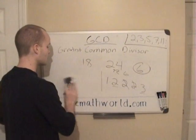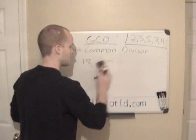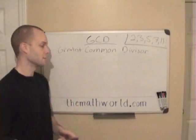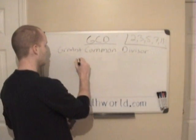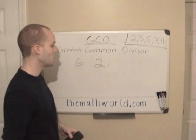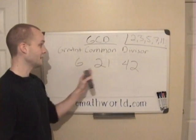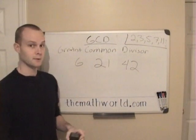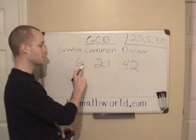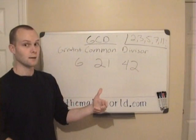Let's take a look at one more example, and this time we're going to do 3 numbers. We're going to find the GCD for 6, 21, and 42. We need to find the prime numbers that go into each of these numbers, and then find what they all have in common.